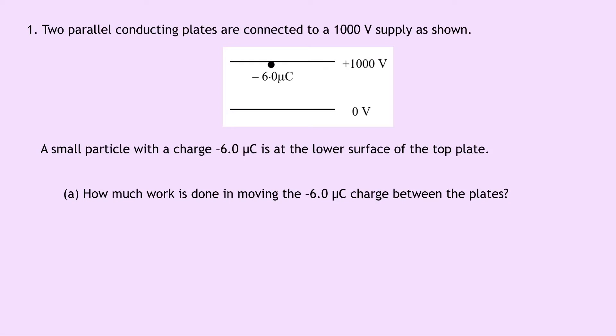So let's get into it. Question 1 says that two parallel conducting plates are connected to a 1000V supply as shown. A small particle with a charge of minus 6 microcoulombs is at the lower surface of the top plate. Part A says how much work is done in moving the minus 6 microcoulomb charge between the plates.